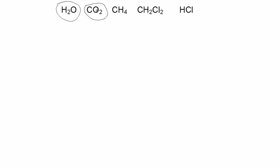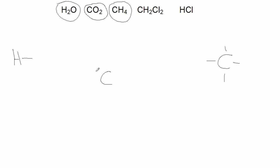Next, we'll do CH₄. I pick carbon as my central atom because there's only one, and there are four hydrogens. Hydrogen bonds with one single bond, and there are four of them. The common bonding form for carbon with four single bonds seems most apparent here. I have four hydrogens and hydrogen bonds with single bonds only, so that works out perfectly.